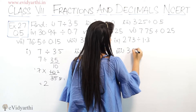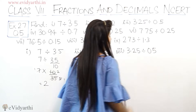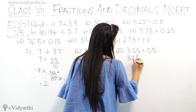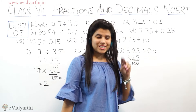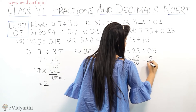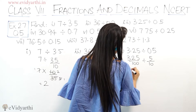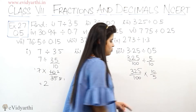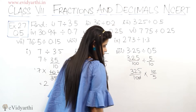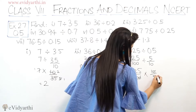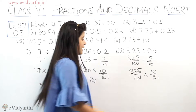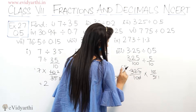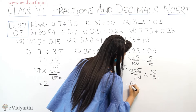Third part: 3.25 divided by 0.5. दोनों ही decimal में हैं. 3.25 can be written as 325 upon 100, because decimal के बाद 2 digits हैं. And 0.5 is 5 upon 10, because decimal के बाद 1 digit है. So now 325 upon 100 divided by 5 upon 10 — division नहीं कर सकते, so multiply by reciprocal: 10 upon 5. The zeros cut, and 5 and 25 cut to give 1 and 5. So we get 65 upon 10.